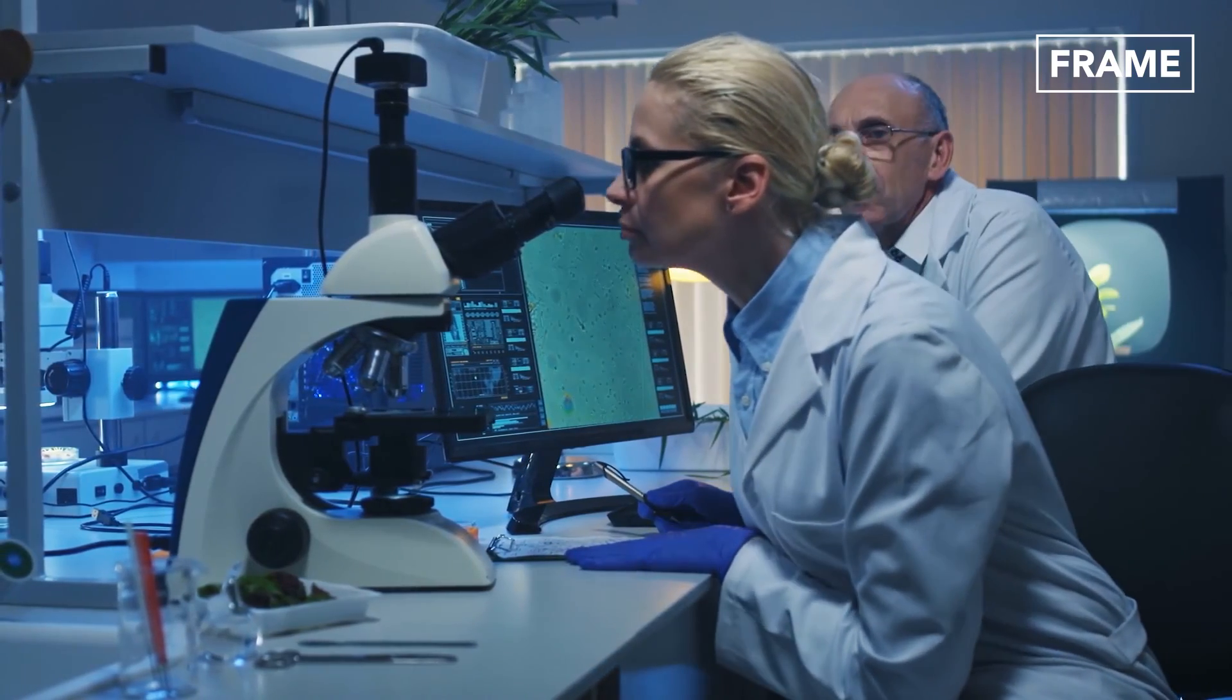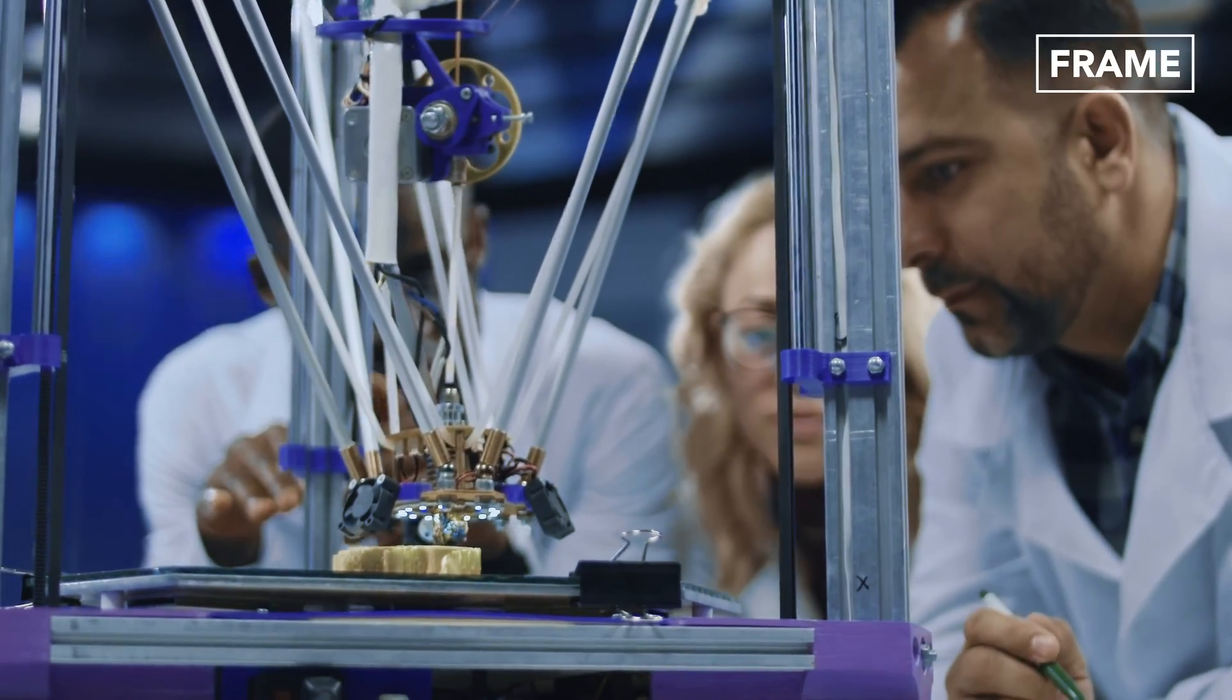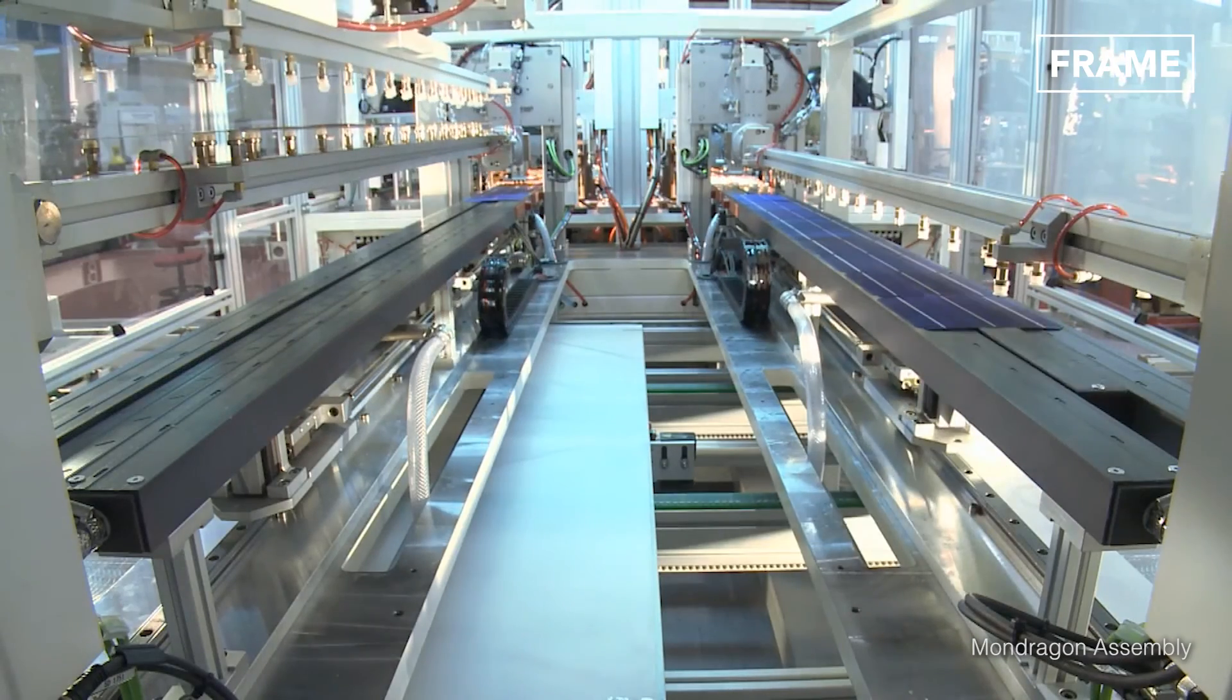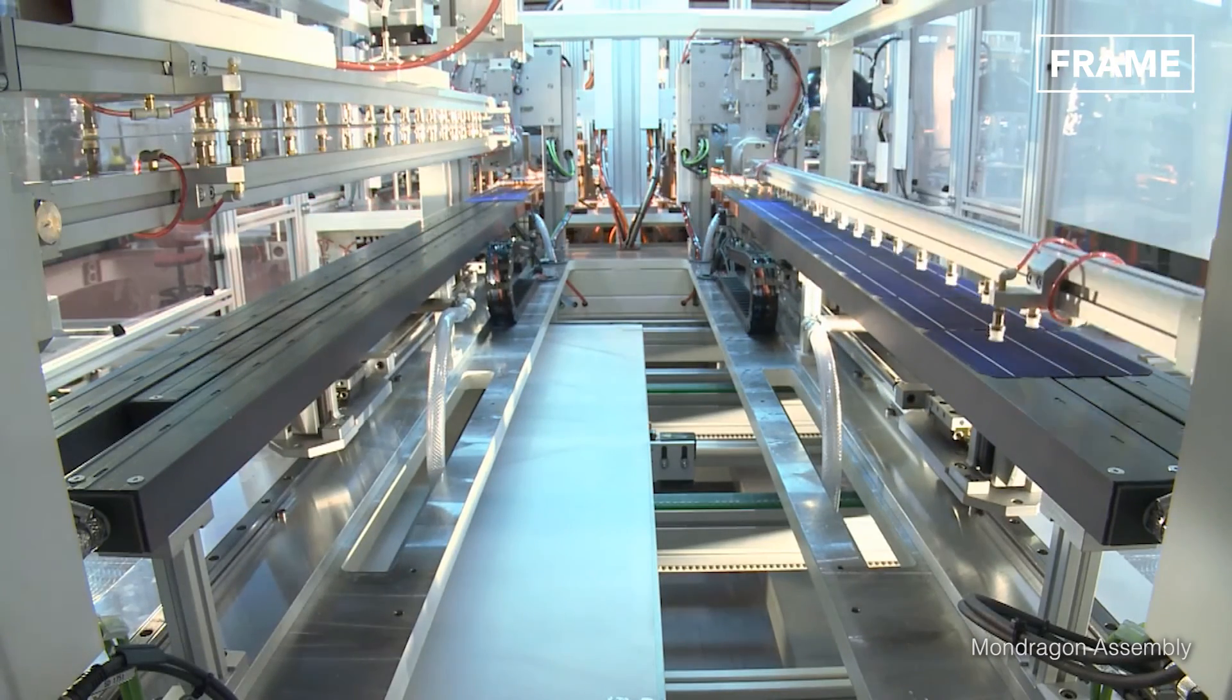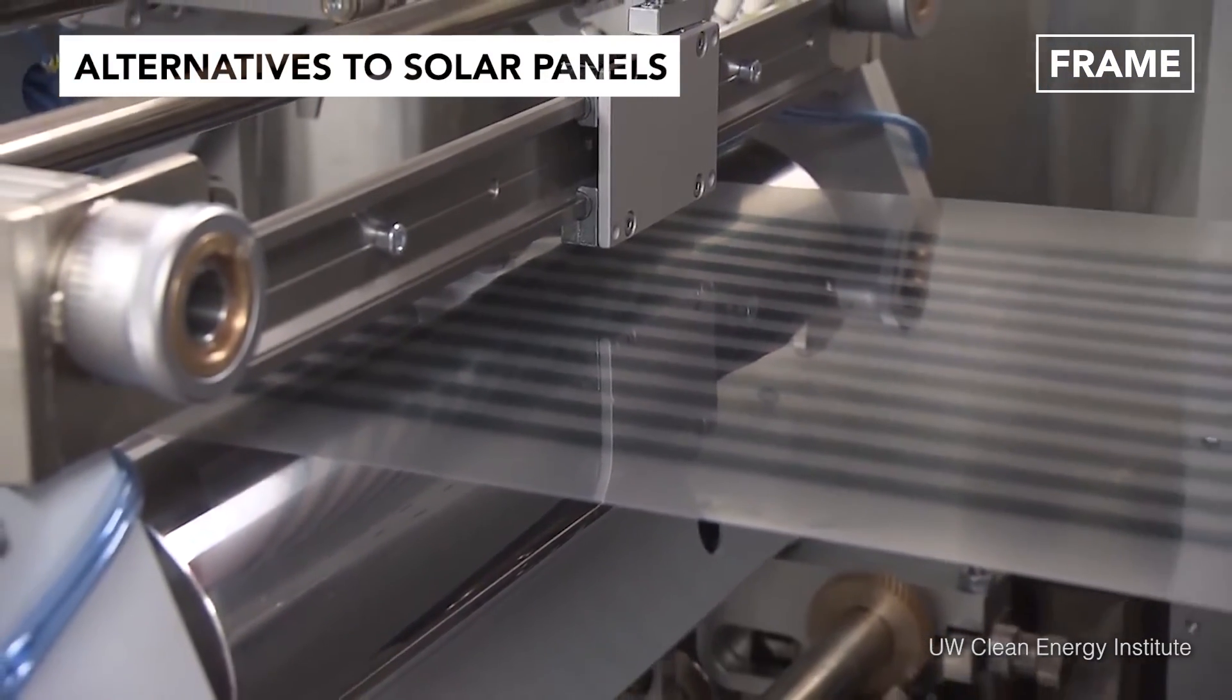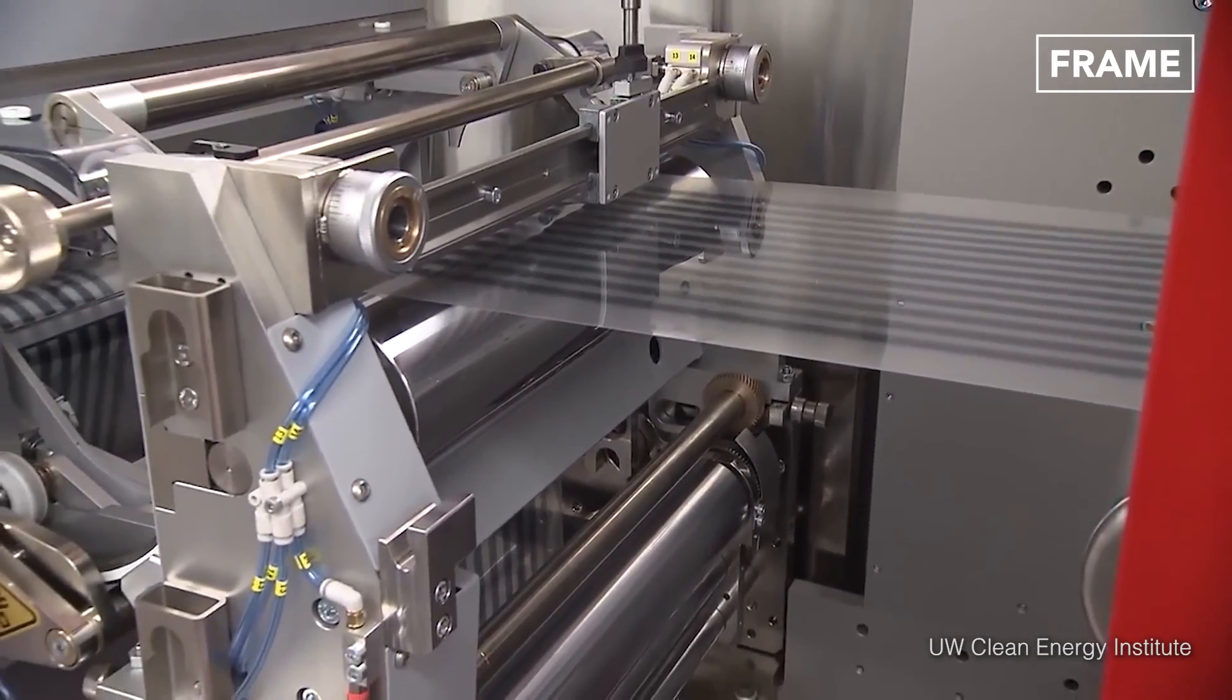Of course, as with any technology, scientists and engineers look for ways to improve upon existing models, and solar cell production is no exception. Unbelievably, incredibly slender solar cells can now be printed onto sheets as thin as paper.